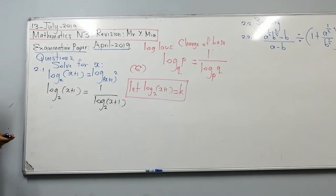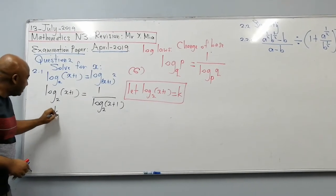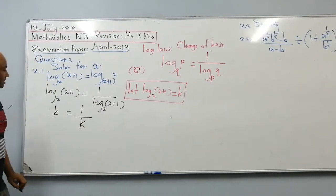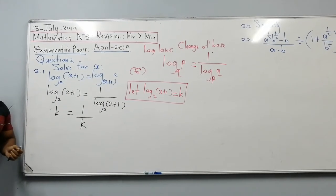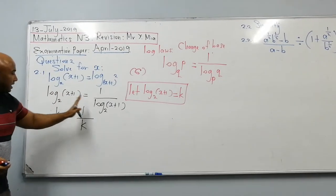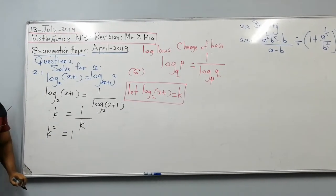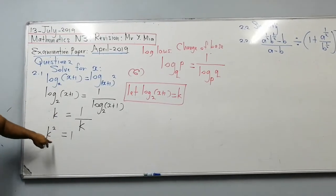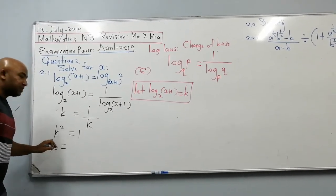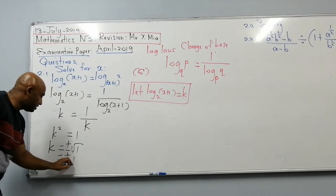Let log of x plus 1 to the base 2 equal k. So the equation becomes k plus 1 over k. I can multiply both sides by k to get k squared equals 1. Therefore k equals plus or minus the square root of 1, which is plus or minus 1.